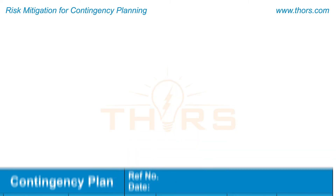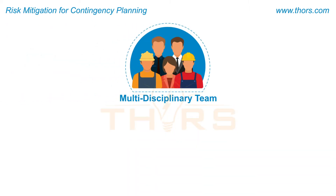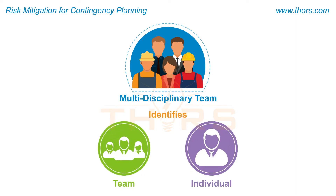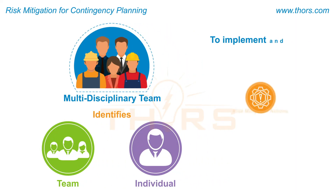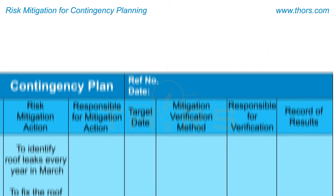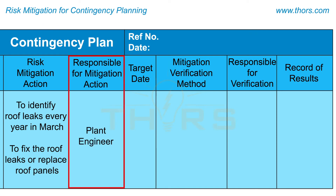Next, the multidisciplinary team identifies the team or individual to implement and follow up on the progress of the mitigation actions. For the leaking roof example, the plant engineer is assigned with the responsibility to fix the leaking roofs.